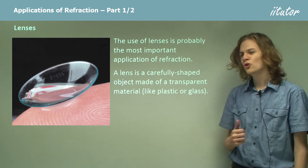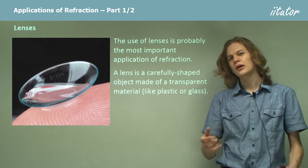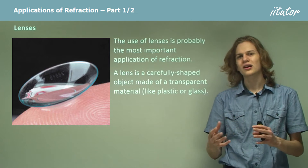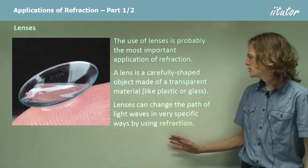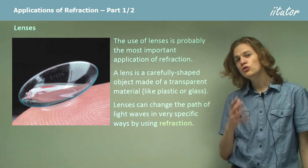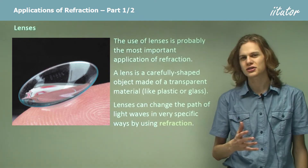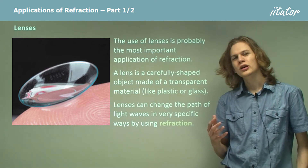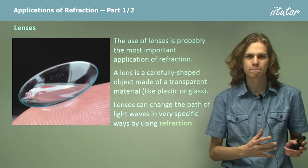This, for example, is a contact lens which, when placed on the eye, bends the light to make it easier for the eye to see. Lenses can change the path of light waves in very specific ways using the phenomenon of refraction. So if you know about refraction, we can use it to predict exactly how these lenses will work.